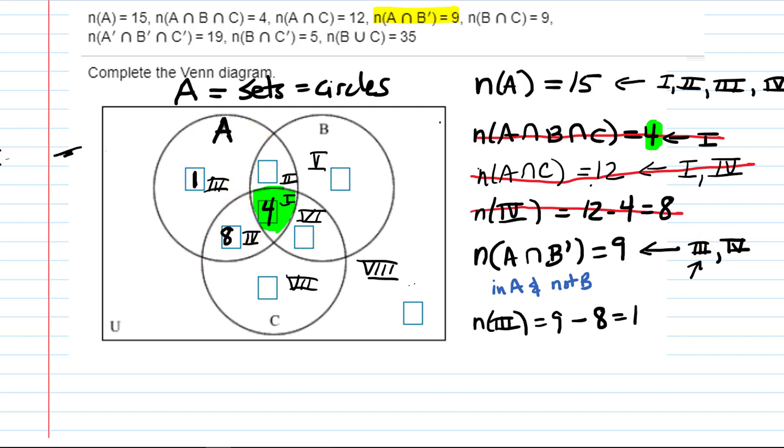I'm going to cross these off because we've already used them. We're going to move to the next fact. The number that are in B intersect C is nine. Don't say it out loud, but at your desk, try and figure out what region or regions are represented by B intersect C. Does everybody have something in their head for which regions? Which regions do you think are represented by B intersect C? One and six. Very good.